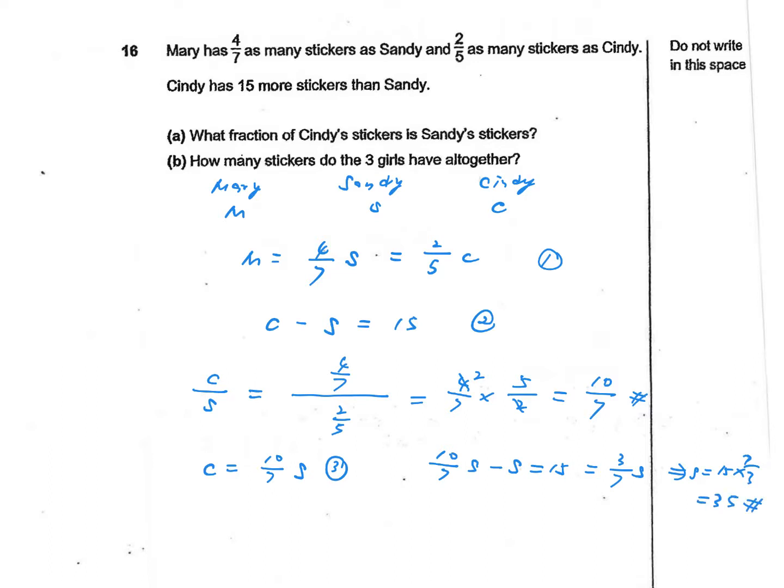That's Sandy's stickers, the number of Sandy's stickers. Let's continue. We also know that C equals 10/7 multiplied by S. In this case, S is 35. The 7 and 35 cancel out each other, so it becomes 5. So we have C equals 50.